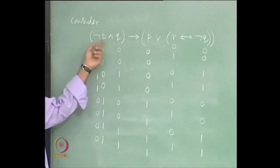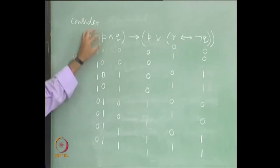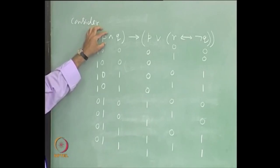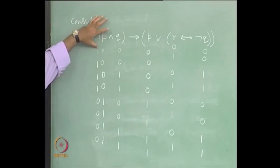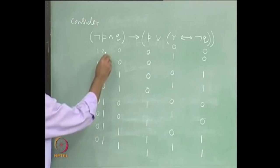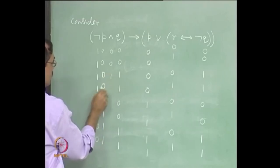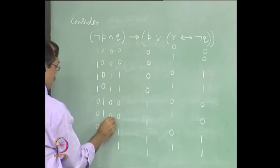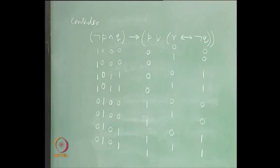Now, when you take not p and q, precedence says it is to be interpreted as (not p) and q — not as not(p and q). What it means is: not p is to be evaluated first, then that result along with q should be ANDed together. So with this column and the third column, we follow the rules of AND. AND becomes 1 only when both of them are 1; otherwise it is 0.